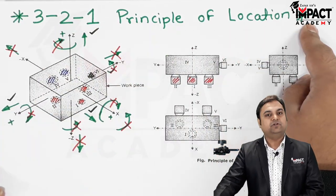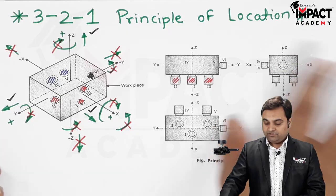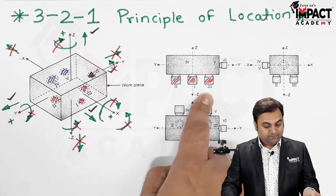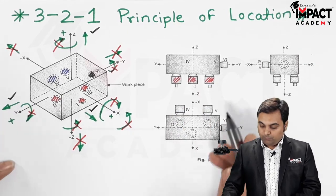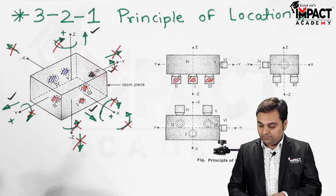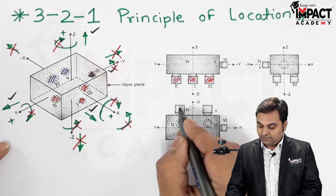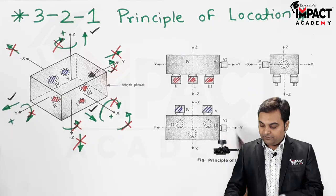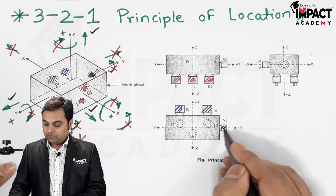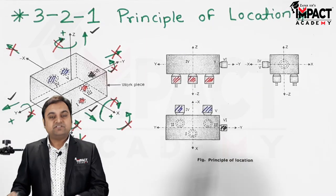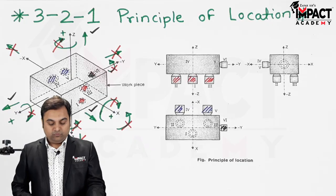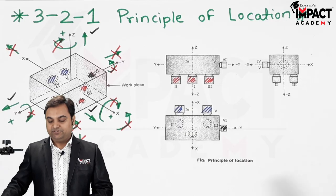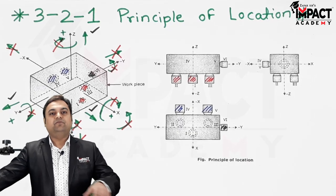This is basically the principle called the 3-2-1 principle of location: we use three pins in one plane, two pins in another plane, and one pin perpendicular to both these planes. That was an explanation of the 3-2-1 principle of location.